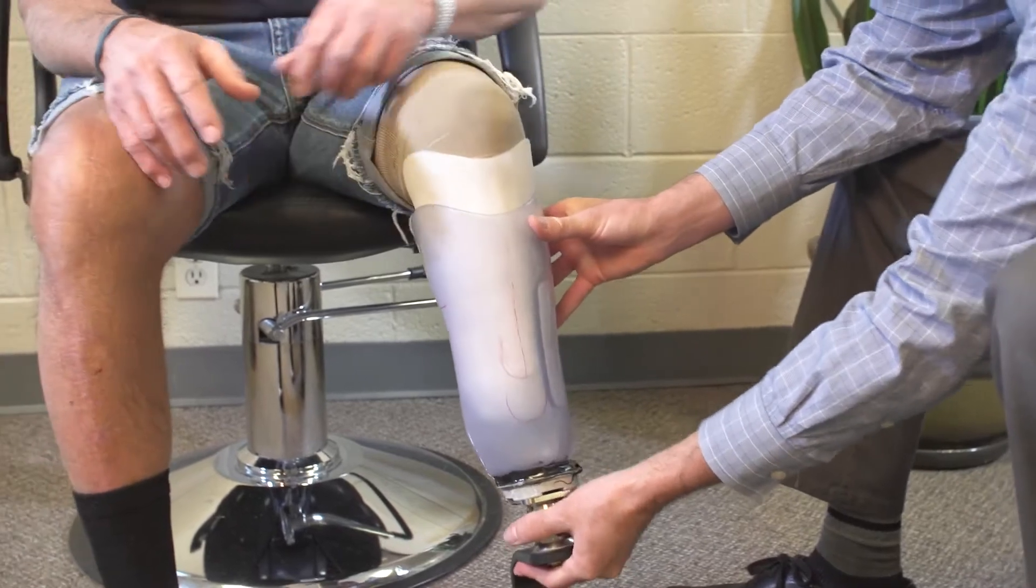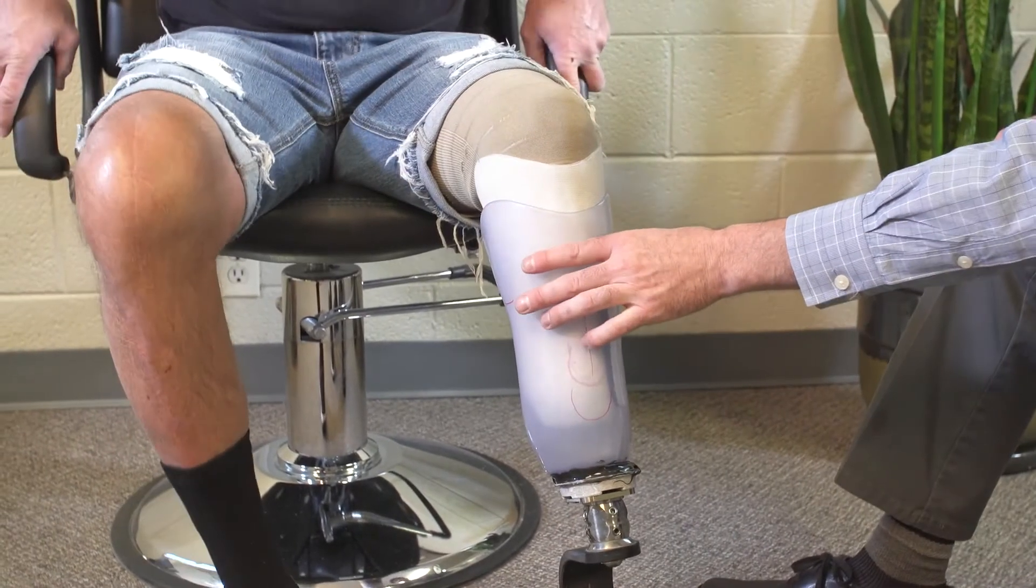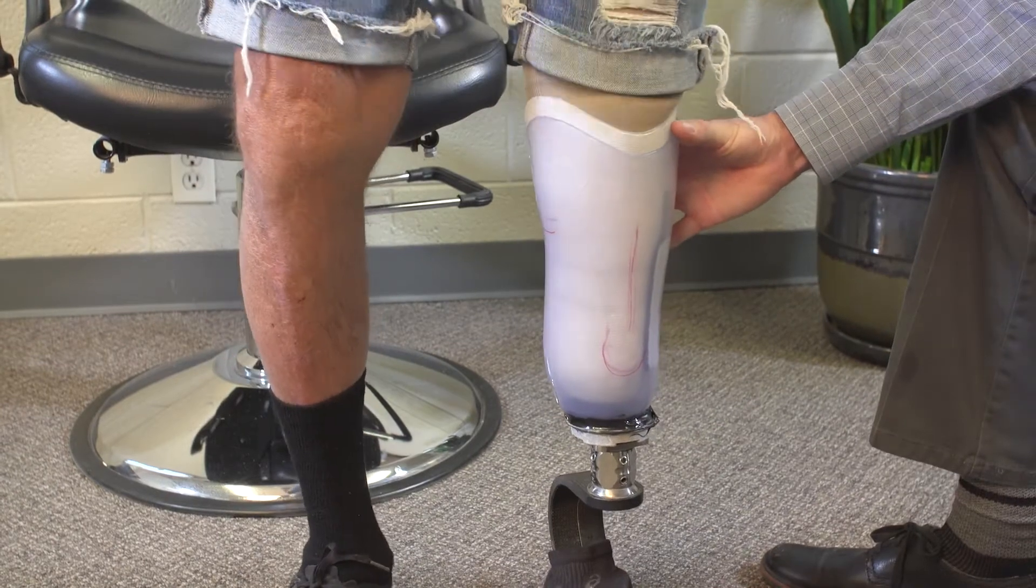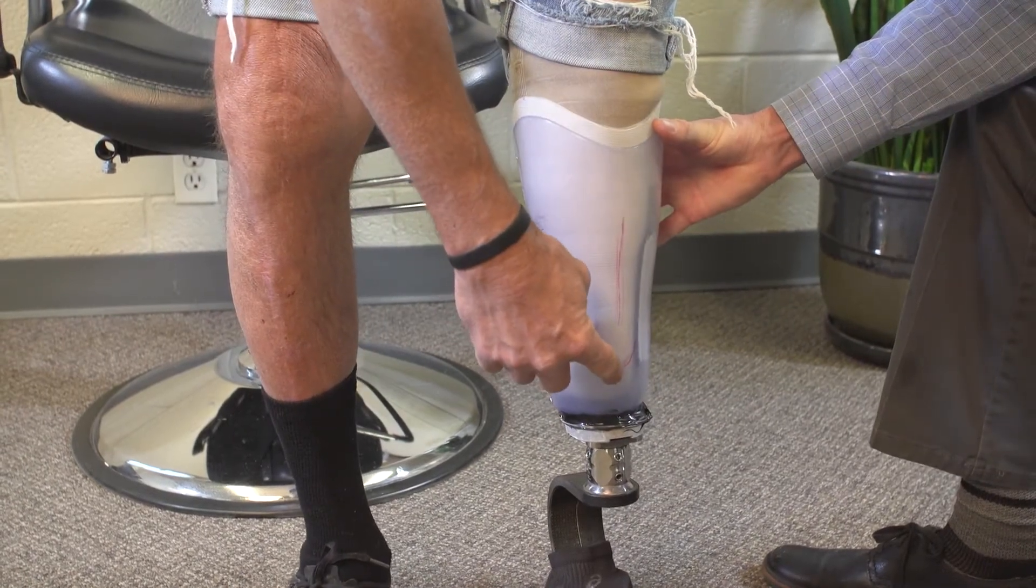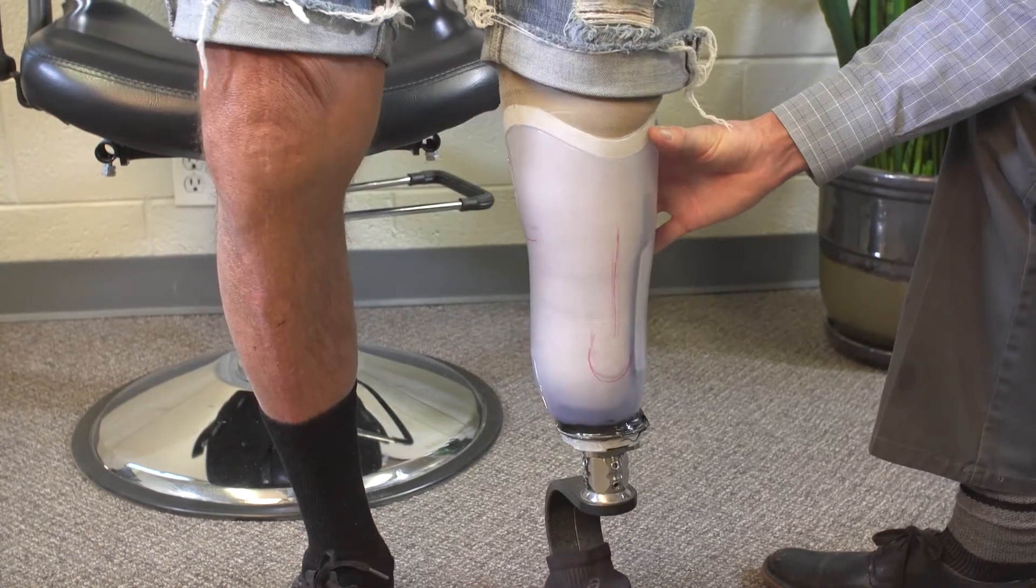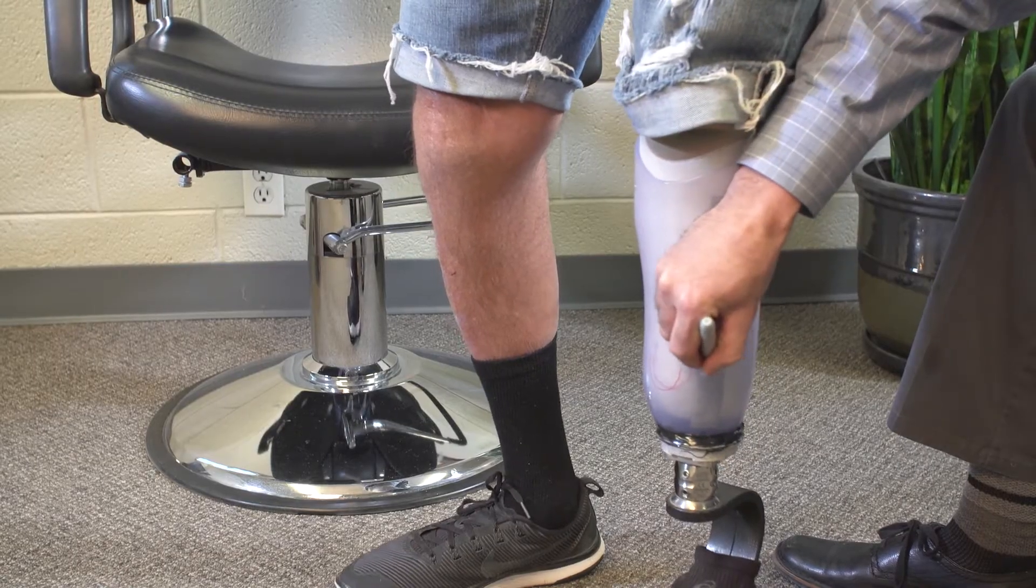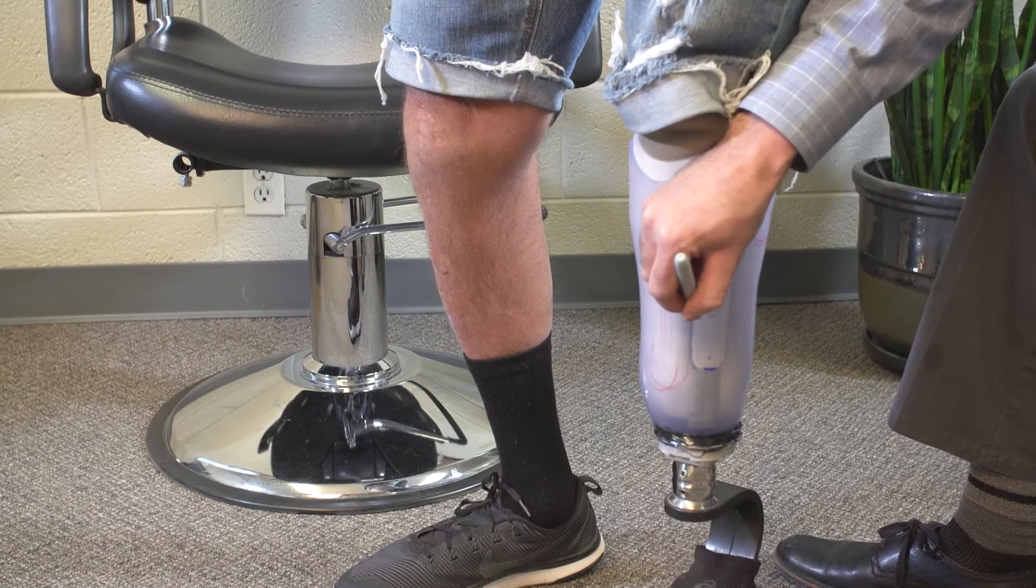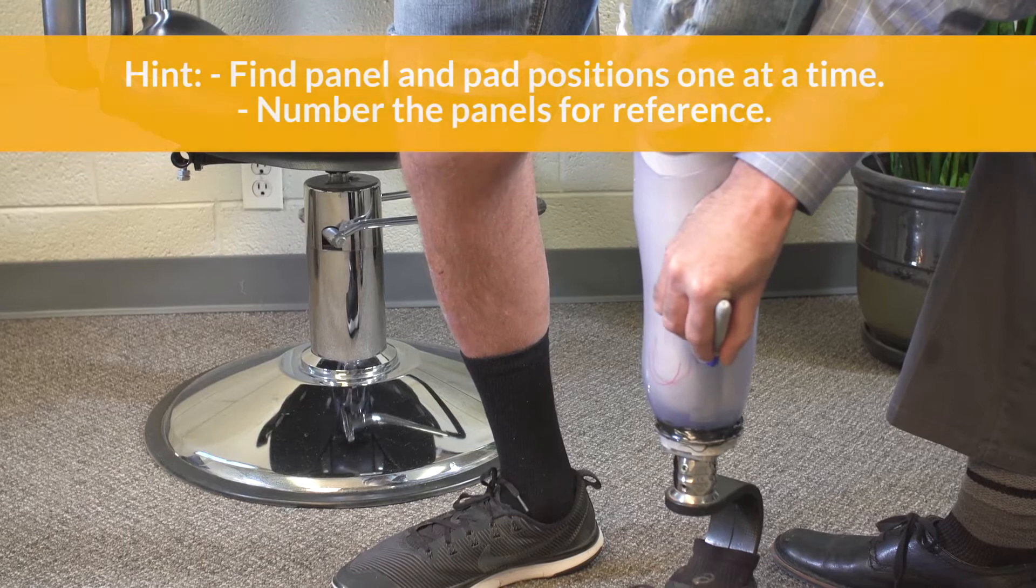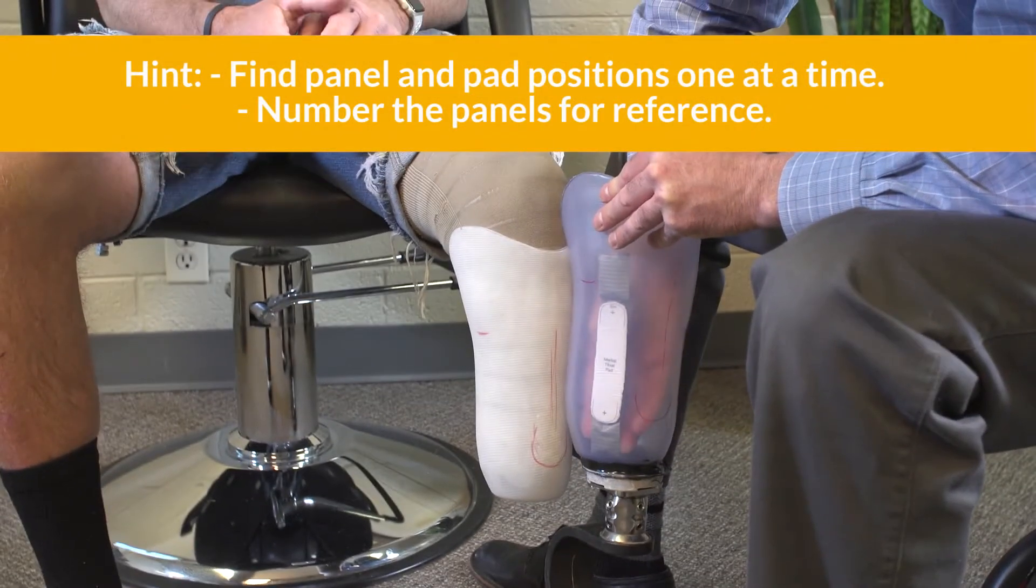Once a pad is positioned, have the patient weight bear in the socket. Work with them to refine the location, remembering that the pressure this pad creates will ultimately be adjustable. Once the patient is happy with the pad position, trace the location on the exterior of the socket with a sharpie. Repeat this process to locate the other two pads.